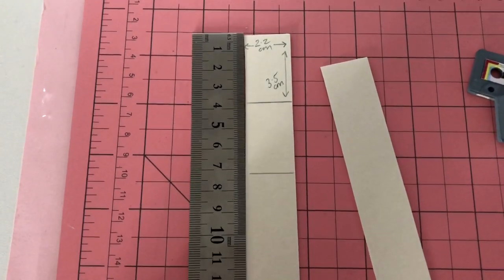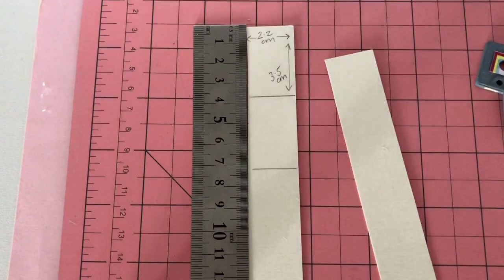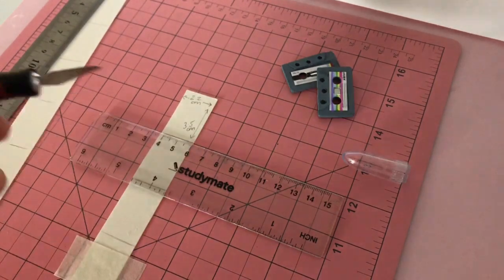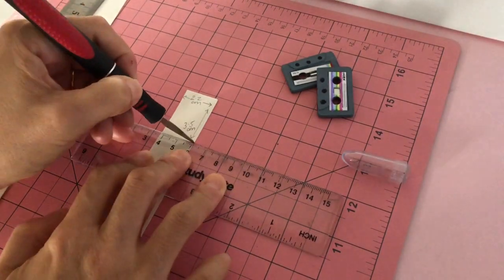Cut your paperboard into rectangles 2.2 centimeters wide by 3.5 centimeters long. It was helpful to cut in batches.